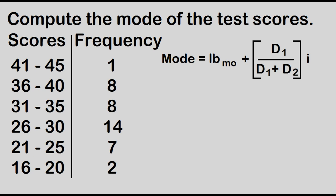What is the modal class? The modal class is the class with the highest frequency. In this group distribution, what is the highest frequency? The highest frequency is 14. So the modal class is 26 to 30.